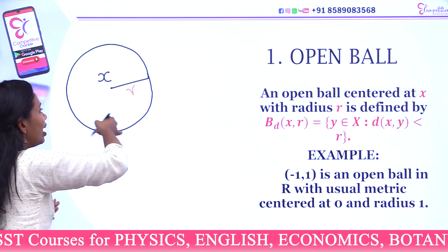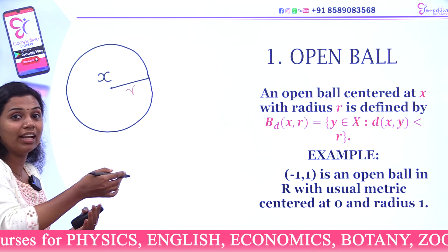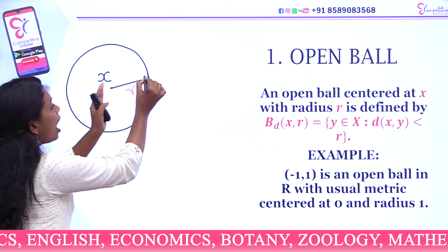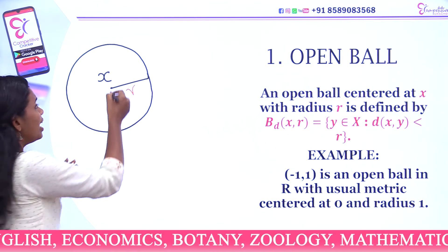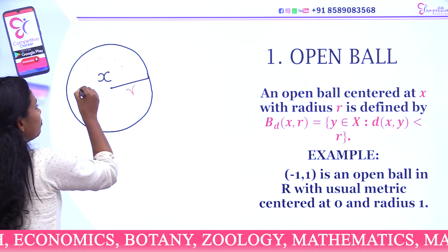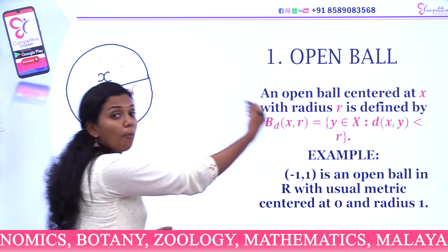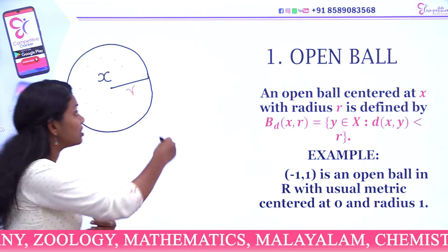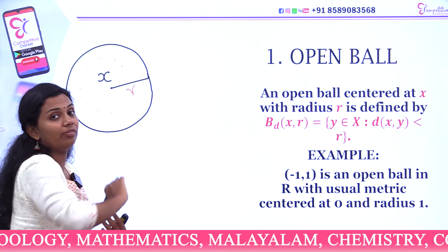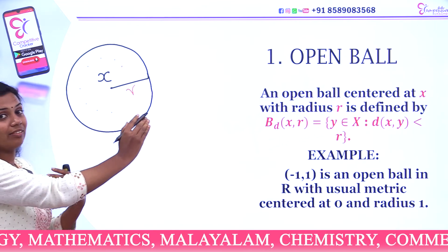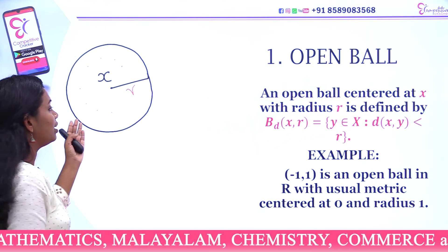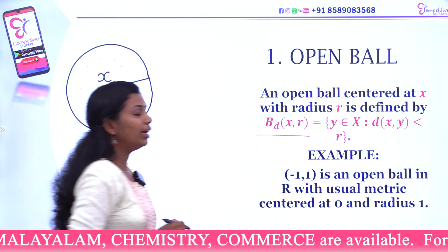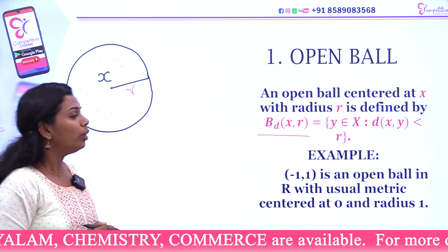The boundary points are not included. The open ball includes only the points within distance r from center x. This is the open ball B(x, r).